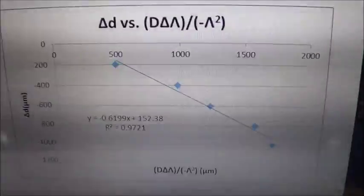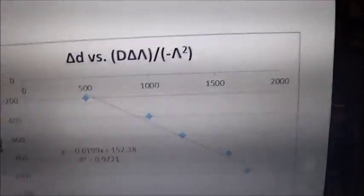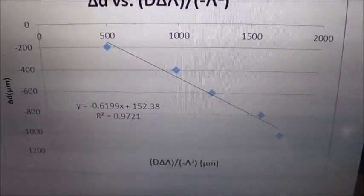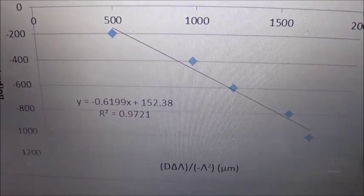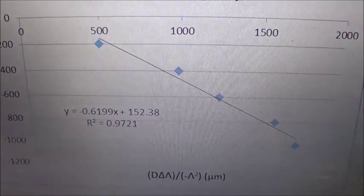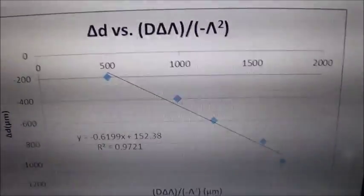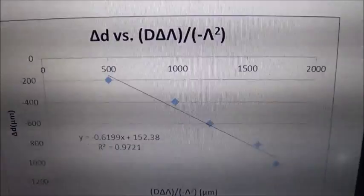Here's our Excel plot with delta D as our Y and this as our X. As you can see, we got a slope of -0.6199 microns, which makes sense because the actual wavelength is about 0.633 microns. So we were pretty close.